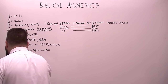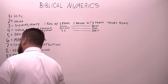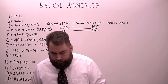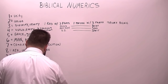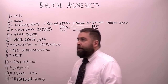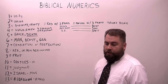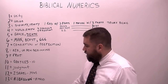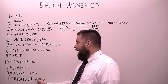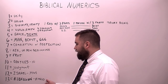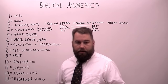Now, 13 is the number of rebellion. There's a man named Nimrod — Nimrod was the 13th from Adam. Nimrod built a kingdom called Babel, which is Babylon. Babylon started a religion called the mystery religion — mystery Babylon. All idol worship comes from this area. Nimrod rebelled against God and started worship from fallen angels and Nephilim. So 13 is the number of rebellion.